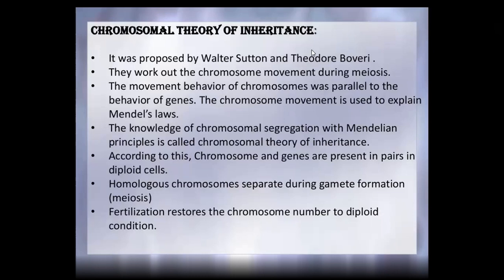They worked with chromosomal movement. Meiosis is done, and variation is produced by crossing over. Crossing over is recombination — DNA recombination involving enzymes. Parental chromosomes are mixed, and in that mixing, there are variations. This forms the chromosomal basis of the chromosomal theory of inheritance.